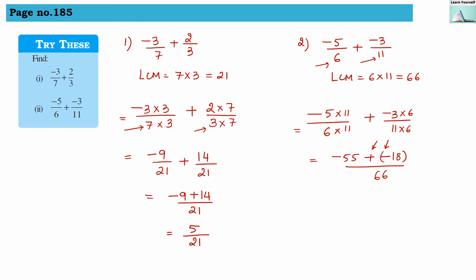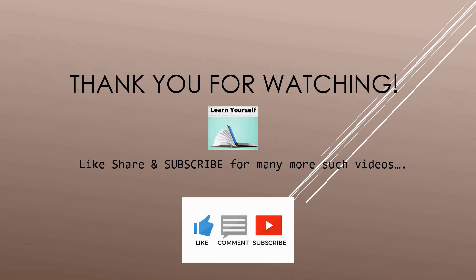Now minus 55 plus minus 18 divided by 66 — since both are negative, we do addition, giving 73, which carries a negative sign. So the answer is minus 73 divided by 66. Thank you for watching and learning with us. If you have any doubt, please comment below. I'll see you in the next video — till then, keep learning, keep sharing, and don't forget to subscribe.